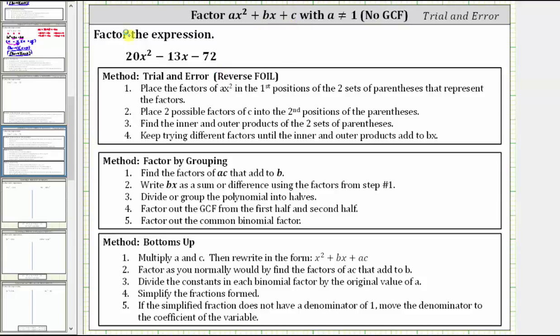Notice for the given trinomial, a is equal to 20, b is equal to negative 13, and c is equal to negative 72.